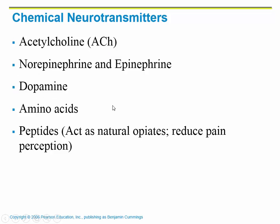We also have dopamine, which is a really important one, along with some amino acids, some peptides, and more. So there are lots of different neurotransmitters, and it depends on what that neuron is communicating with — that is what decides what type of neurotransmitter it holds.